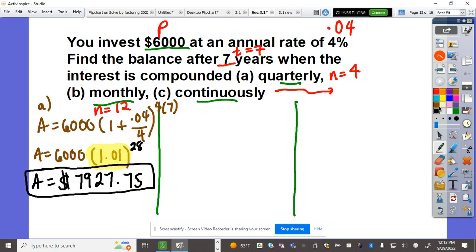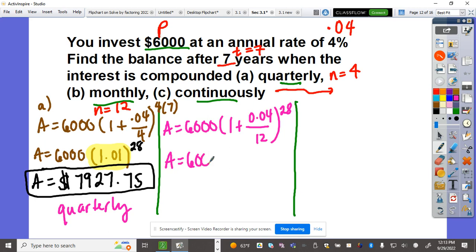This is for quarterly. For monthly, 6,000(1 + 0.04/12)^28. 0.04 divided by 12 is 0.0033 plus 1 equals 1.003. Don't stop writing the threes to make it more accurate. Raised to 28 times 6,000 gives $6,585.94 for monthly.